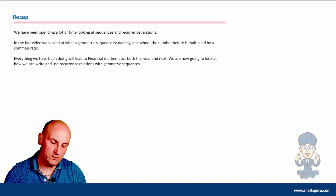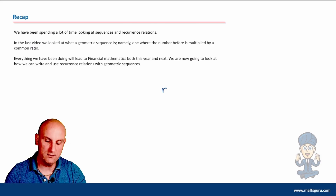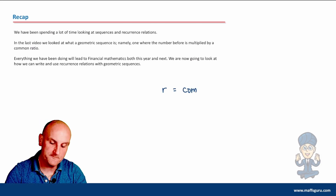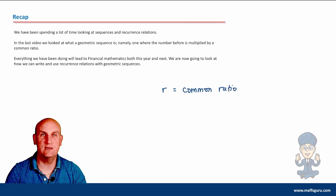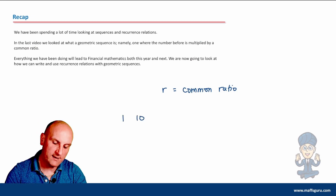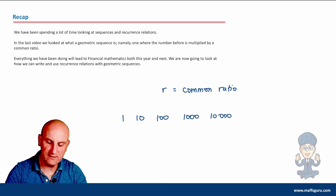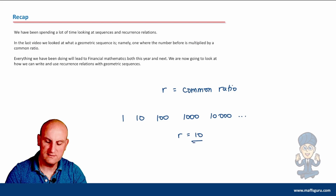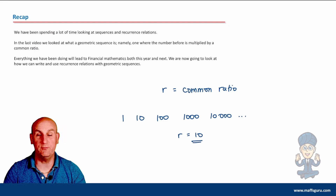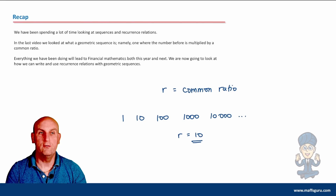From the previous lesson, the little value r is the common ratio — basically the number that gets multiplied every single time. So if I had 1, 10, 100, 1000, 10000, then r would equal 10, because each term is becoming ten times the previous one.